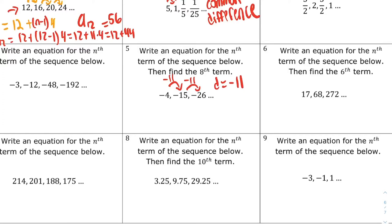Let's make a formula for this. a_n equals, you write the first number, then plus n minus 1 times the common difference, which is negative 11.